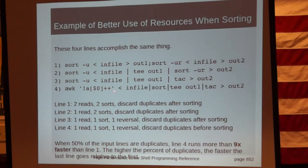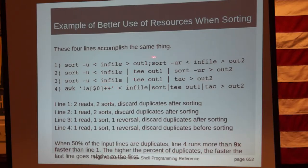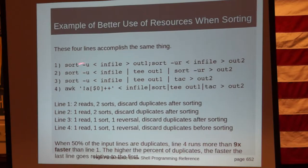The fourth line uses an associative array. All it does is look at each line as it's coming in and say: I've seen this line before, I won't pass it on. So it's eliminating duplicates right there, cutting in half the amount of total data that the pipeline has to process. The rest is the same as the line before. At each step we have reduced what the computer has to do. If 50% of the lines are duplicates, this line is almost ten times faster than the first one.